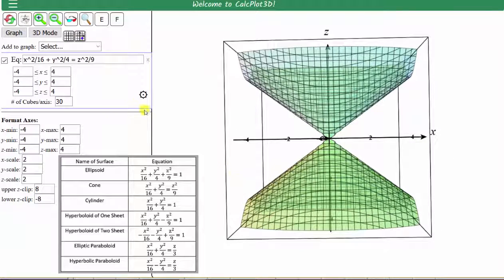Next we have the cylinder, which is given by the equation x to the second divided by 16 plus y to the second divided by 4 equals 1. So we'll just delete this and enter equals 1.